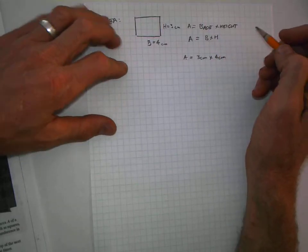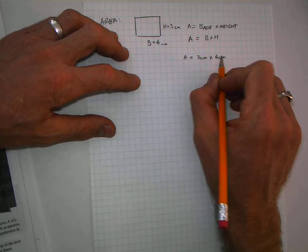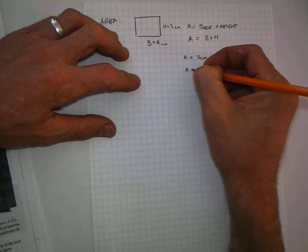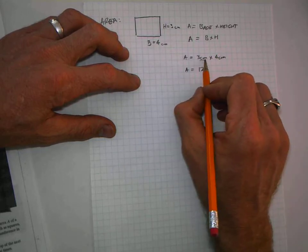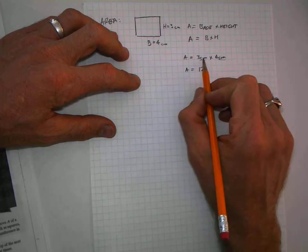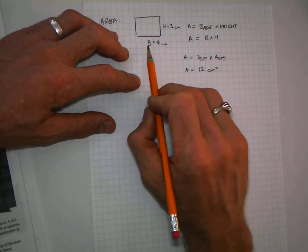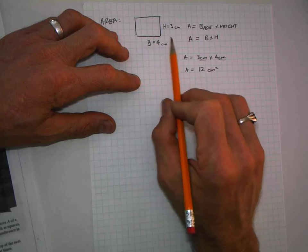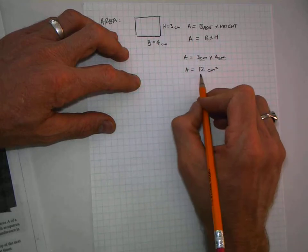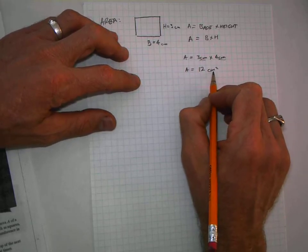What you have to know is the units have to go with it. Area is 3 times 4, which is 12, but what about the centimeters? We also multiply the centimeters. What's a centimeter times a centimeter? Centimeter squared. So the final answer is: the area equals base times height, which is 4 cm × 3 cm = 12 cm².